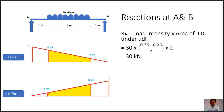Similarly for Rb, we draw the influence line diagram for Rb varying from 0 to 1. The procedure is the same: UDL intensity multiplied by the area under the ILD. We get the same trapezoid in the opposite direction, giving Rb = 30 kN. We can easily find these reactions using the concept of influence line diagram.